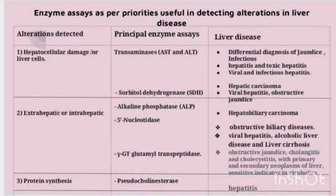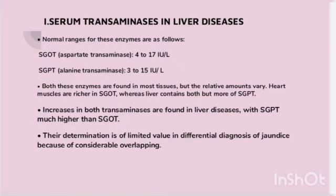For serum transaminases in liver diseases, the normal ranges for SGOT (aspartate transaminase) and SGPT (alanine transaminase) are 3 to 15 international units per liter. Both enzymes are found in most tissues but in varying relative amounts. Heart muscles are richer in SGOT whereas the liver contains both but predominantly SGPT.